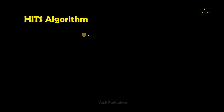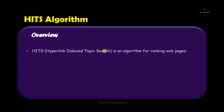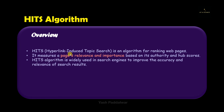Now let's look at the HITS algorithm. This algorithm identifies whether a particular node is the best authority node or the best hub node. HITS stands for Hyperlink Induced Topic Search. It is an algorithm for ranking web pages based on the relevance of information present in that web page. It measures page relevance and importance based on authority as well as hub scores. The HITS algorithm is widely used in search engines to find relevant web pages based on a user's query, and it is popular for its accuracy and relevance of search results.